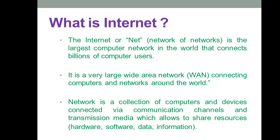The internet is a very large or wide area network connecting computers and networks around the world. You can connect computers in two ways: first, using a LAN (Local Area Network) within a single lab to connect different PCs. But if you want to send or receive information from different locations — outside the lab, outside your country — then you need to use a WAN (Wide Area Network), and for that purpose there is the internet.